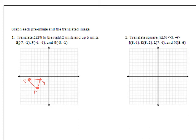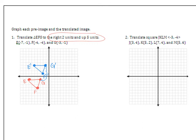Next, we're going to translate this to the right two units and up five units. I'll start with G and go to the right two — one, two — and then count up five: one, two, three, four, five. That's my new G prime. Same thing with F: right two and up five, label that F prime. Same with E: right two and up five, label that E prime, then connect. The triangle stays congruent — same size, same shape — it just slid right two and up five.